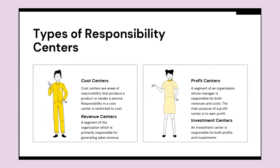There are four types of responsibility centers. The first is cost centers, defined as areas of responsibility that produce a product or render a service; responsibility in a cost center is restricted to costs. The second type is revenue centers, defined as a segment of the organization primarily responsible for generating sales revenue. The third type is profit centers, defined as a segment of an organization whose manager is responsible for both revenues and costs, with the purpose of earning profit. The last type is investment centers, which are responsible for both profits and investment.